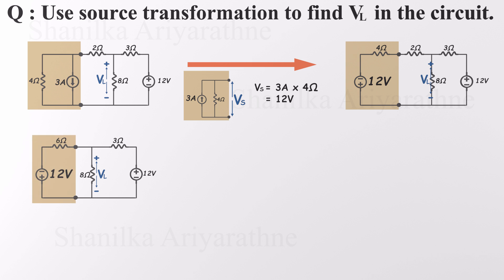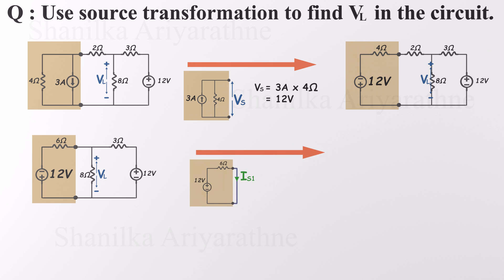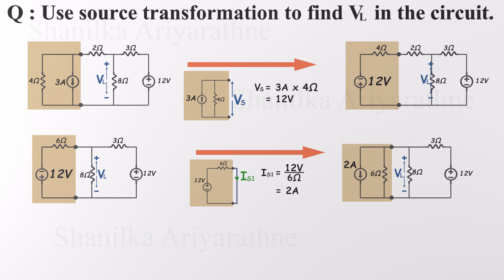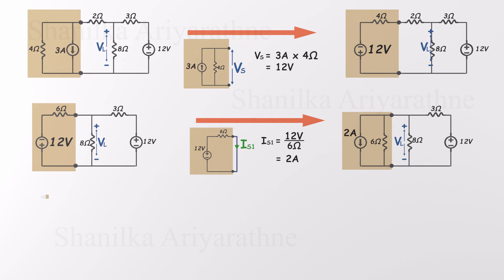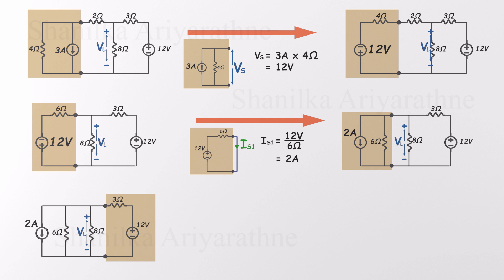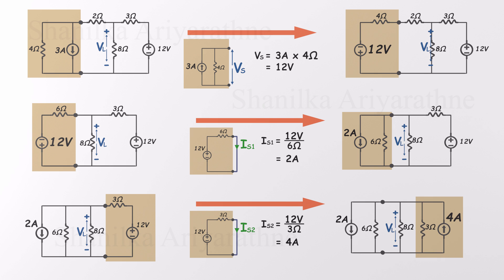Now we transform again. We convert the 12 volt source in series with 6 ohms into a current source in parallel with 6 ohms. Same process: disconnect the rest of the circuit, short the terminals, and calculate the current — 12 over 6 is 2 amps. There's one more 12 volt voltage source left in the circuit, connected in series with a 3 ohm resistor, so let's convert that as well into a current source in parallel with a 3 ohm resistor. Isolate the branch, short the terminals, and use Ohm's Law: 12 over 3 is 4 amps.